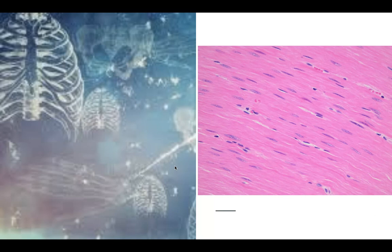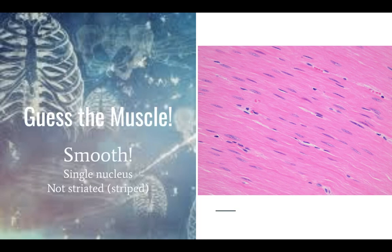Let's play a little game called Guess the Muscle Tissue. Under the microscope, here's a picture of one of the three muscle types. If you want, you can pause the video, think about it, take a look, and we'll reveal the answer. Ready? Here we go. This is smooth muscle: one nucleus per cell and it's not striped.